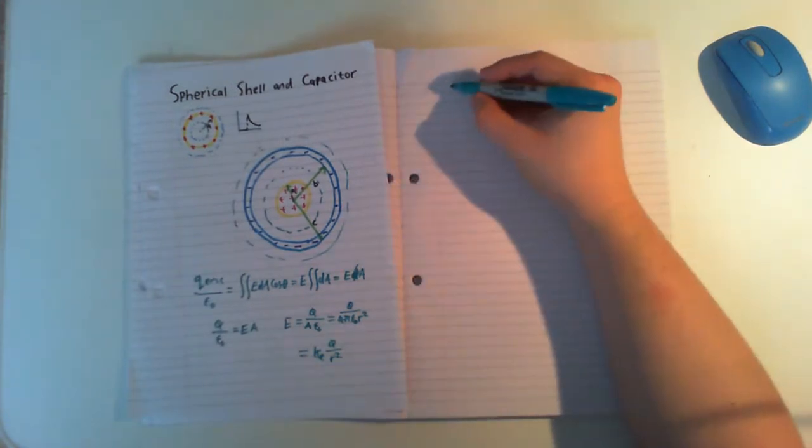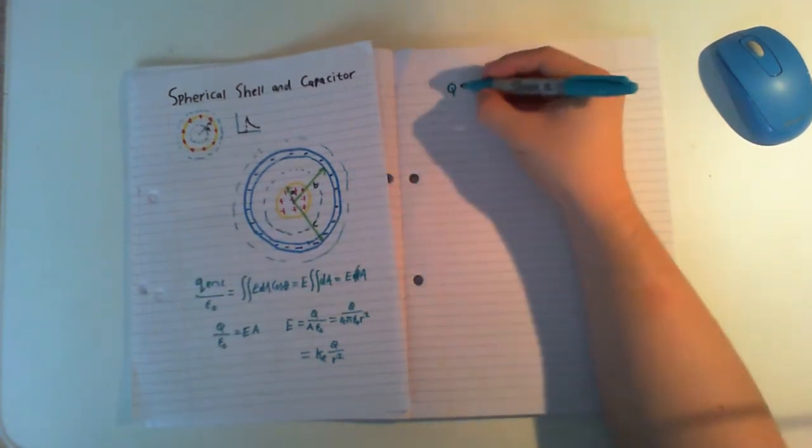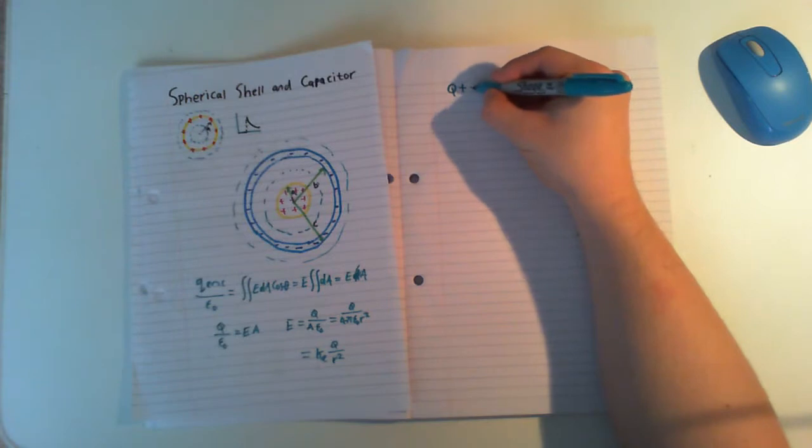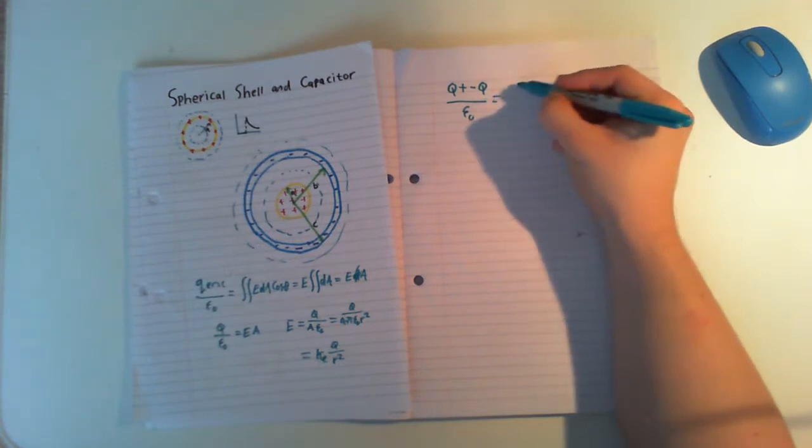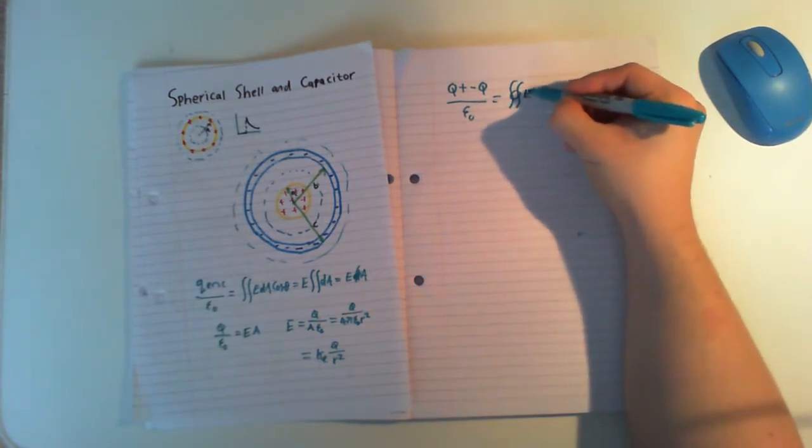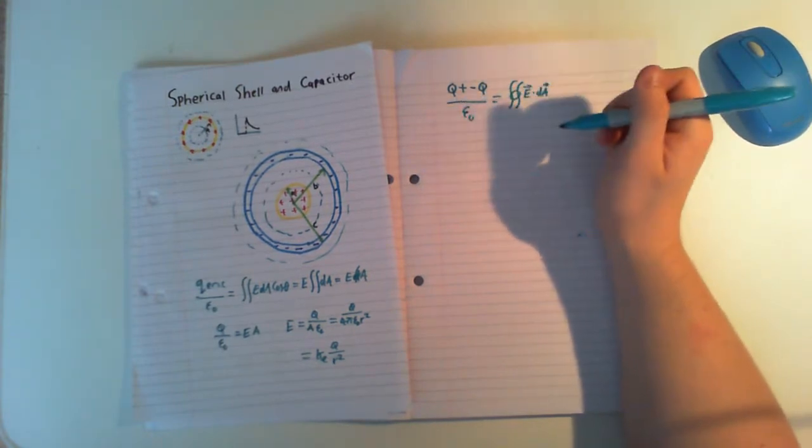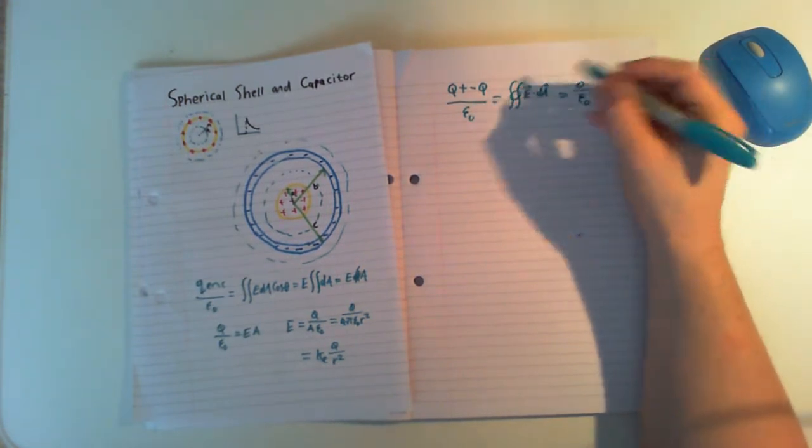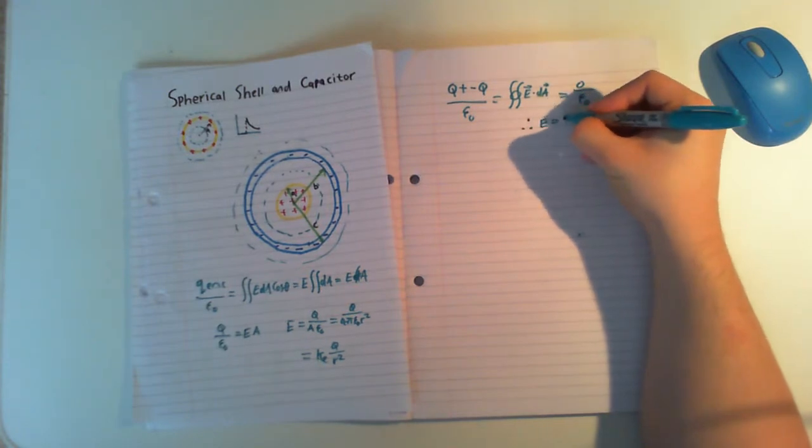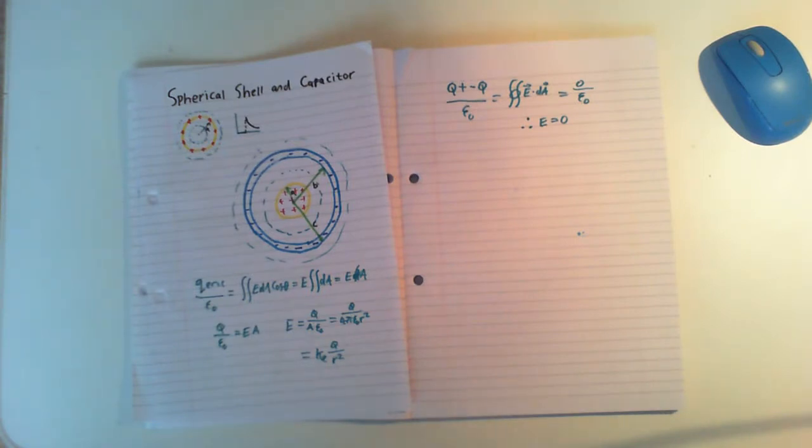Plus, and now we have a negative Q, which is our negative charge here, all over epsilon 0, which is equal to our integral, which is equal to our integral E dA. And we can see then here, a positive Q plus a negative Q is going to be 0. So that means all of this is equal to 0 over epsilon 0. So that therefore means that E equals 0. So area obviously has a value, but that means that E must not, for that to equate, to be 0.